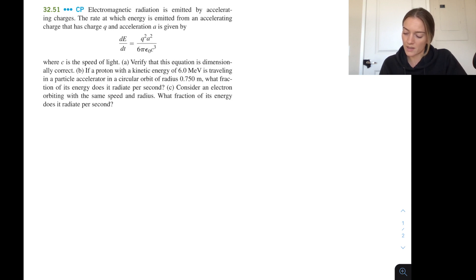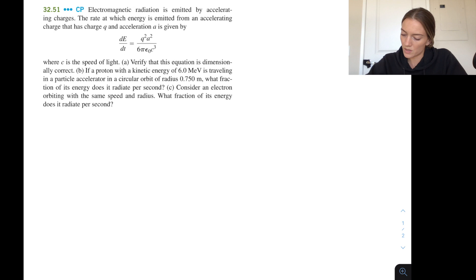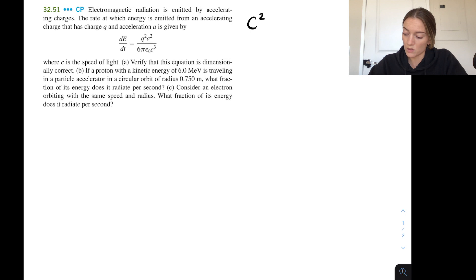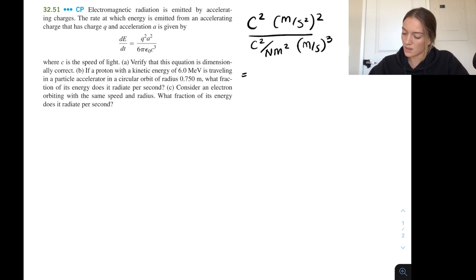Part A asks us to verify the equation is dimensionally correct. This is a good habit in physics — checking that your answer has the right dimensions. So let's check: Q squared gives Coulombs squared; acceleration squared gives meters per second squared, all squared. The denominator has 6 (dimensionless), pi (dimensionless), epsilon naught in Coulombs squared per Newton meter squared, and c cubed which is meters per second cubed.